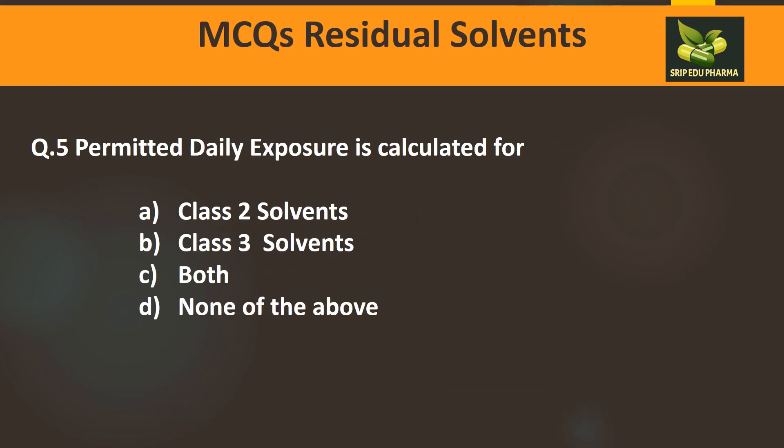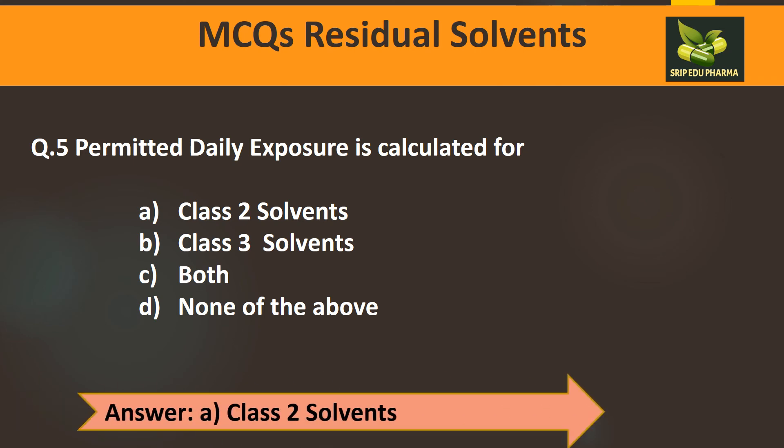Question 5: Permitted Daily Exposure (PDE) is calculated for which class? A) Class 2 solvents, B) Class 3 solvents, C) Both, D) None. PDE is specifically calculated for Class 2 solvents; it is not a primary concern for Class 3. Therefore the answer is A: Class 2 solvents.